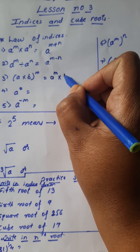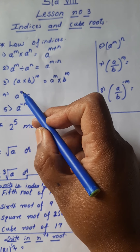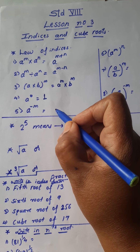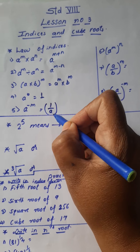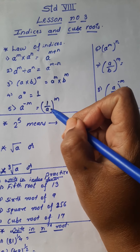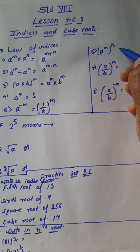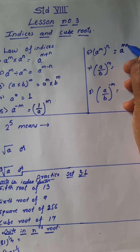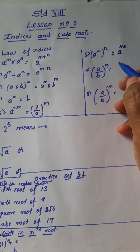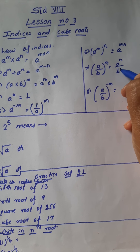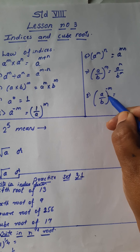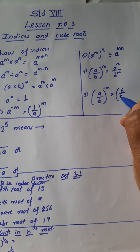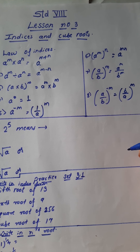Now, a multiplied by b in a bracket raised to m — we will give m to both the alphabets. Next, a raised to 0 is equal to 1; any number raised to 0 is always 1. Next, a raised to minus m — we write 1 upon a raised to m; when there is a negative power it becomes 1 upon. Next, a raised to m raised to n — we write a raised to m multiplied by n, directly mn. Next, a upon b raised to m — we give this m to both numerator and denominator. Next, a upon b raised to minus m — we do the reciprocal of the inner alphabets and keep it raised to m.